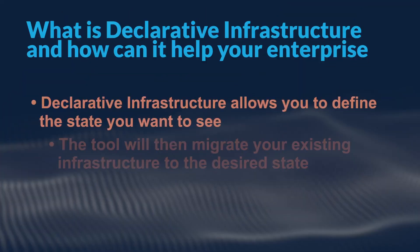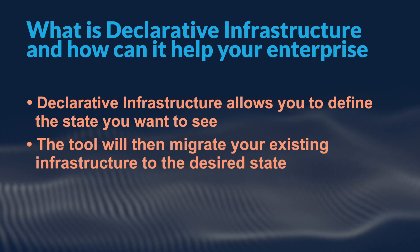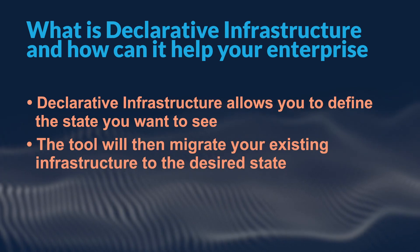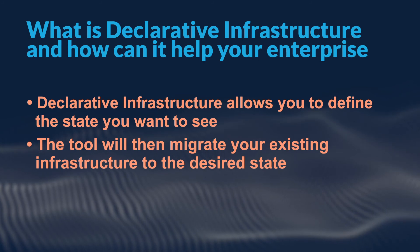Instead of taking existing servers and modifying them piece by piece, thinking what could I change to make this server more like what I'm looking for, use declarative infrastructure. Tell your DevOps software what state you need your servers to be in, and allow it to deduce the necessary series of steps. And if you're unsure, have it start from a blank slate, bringing up new instances of everything. That's cheap to do on the cloud — why not take advantage of the power of cloud computing?